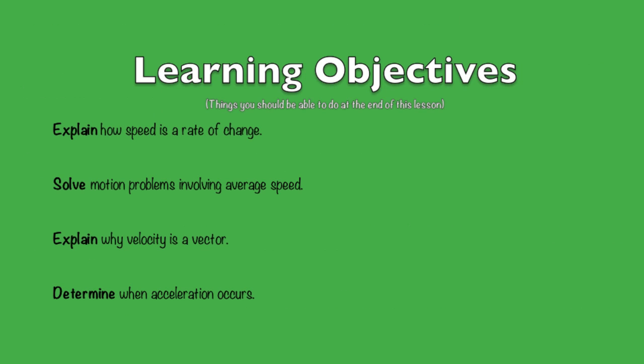The learning objectives, or things you should be able to do at the end of this lesson, are as follows. You should be able to explain how speed is a rate of change, solve motion problems involving average speed, explain why velocity is a vector, and determine when acceleration happens.